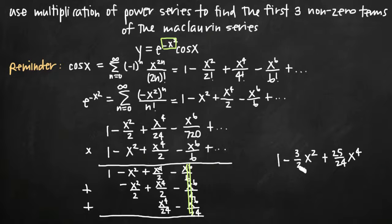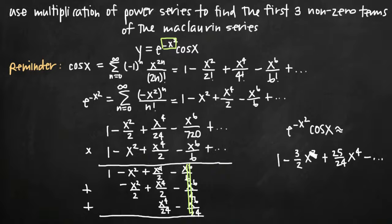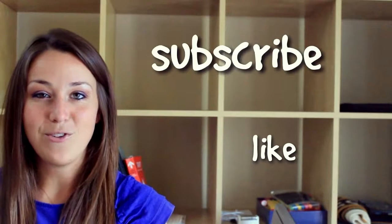Those are our first three nonzero terms. We can say that e to the negative x squared times cosine of x is approximately equal to 1 minus 3 halves x squared plus 25 over 24 x to the fourth, and the series continues. I hope you found that video helpful — if you did, like the video and subscribe to be notified of future videos.